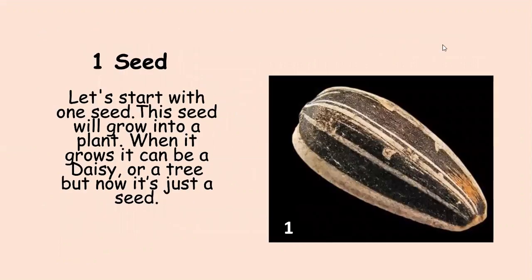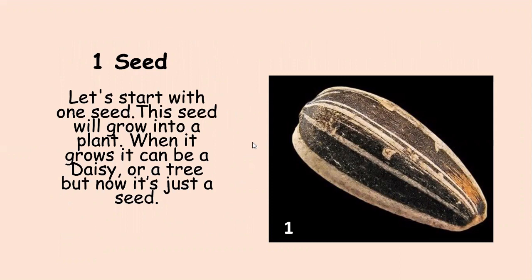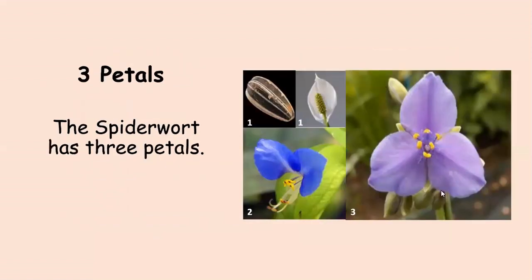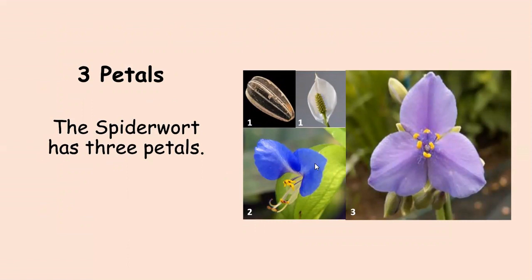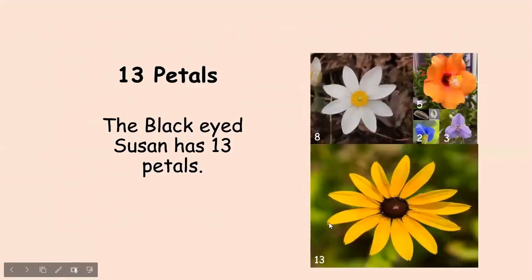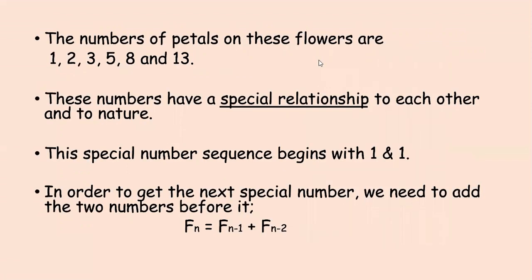Let's start with a seed. This seed will grow into a plant — it can be a daisy or a tree, but now it's just a seed. The Calla Lily is a flower with one petal. The Asiatic Dayflower has two petals. The Spiderwort has three petals. The Hibiscus has five petals. The Bloodroot has eight petals. And the Black-Eyed Susan has 13 petals. Notice the order of the boxes — the numbers of petals on these flowers are 1, 2, 3, 5, 8, and 13. These numbers have a special relationship to each other and to nature.